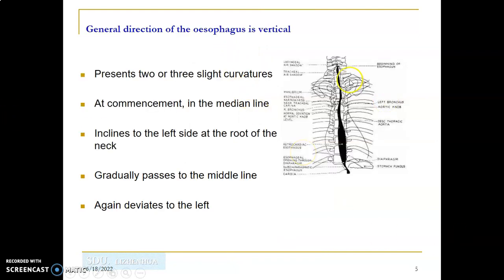The esophagus is vertically oriented and has two or three slight curvatures. It begins at the midline, then inclines towards the left at the root of the neck, returns to the midline, and again deviates towards the left at the lower portion of the posterior mediastinum.